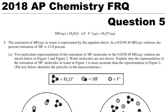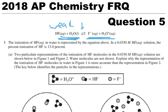I'm going to go over the 2018 AP Chemistry FRQ question number five. This is a four-point question. We have HF plus water turning into F minus and H3O plus, which is the dissociation of a weak acid. We know it's a weak acid because we have a double arrow, and we're going to be talking about the Ka of this.